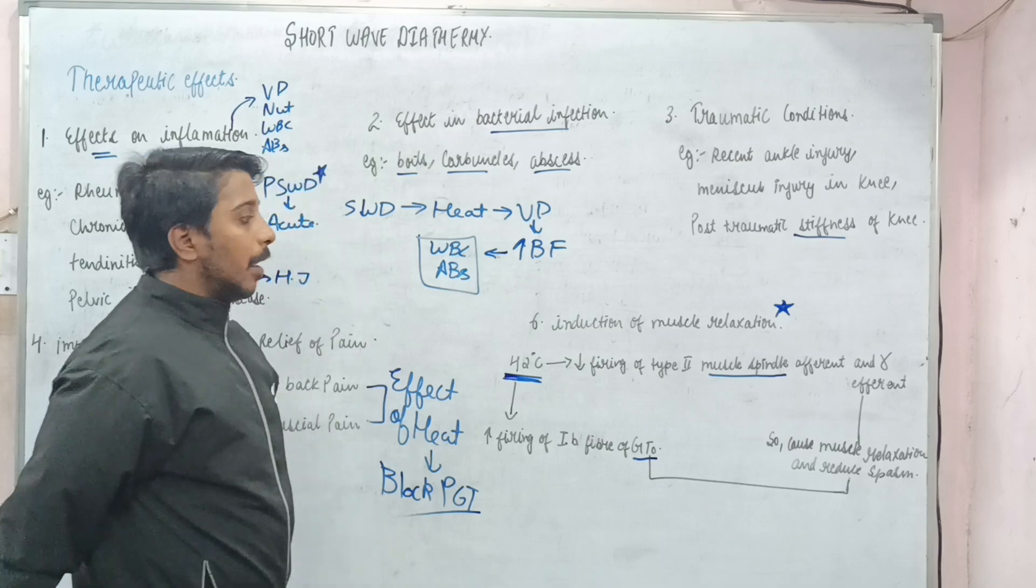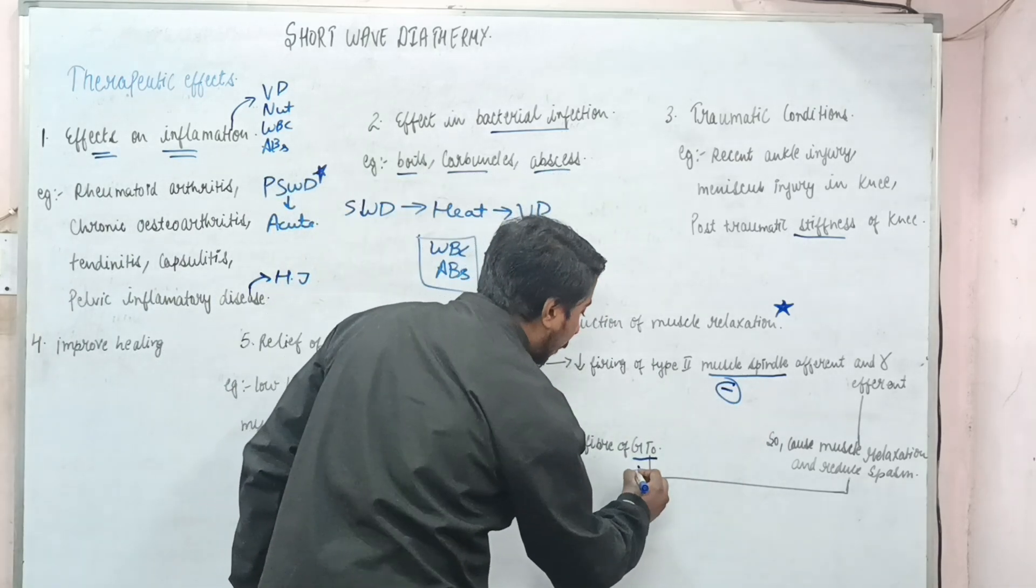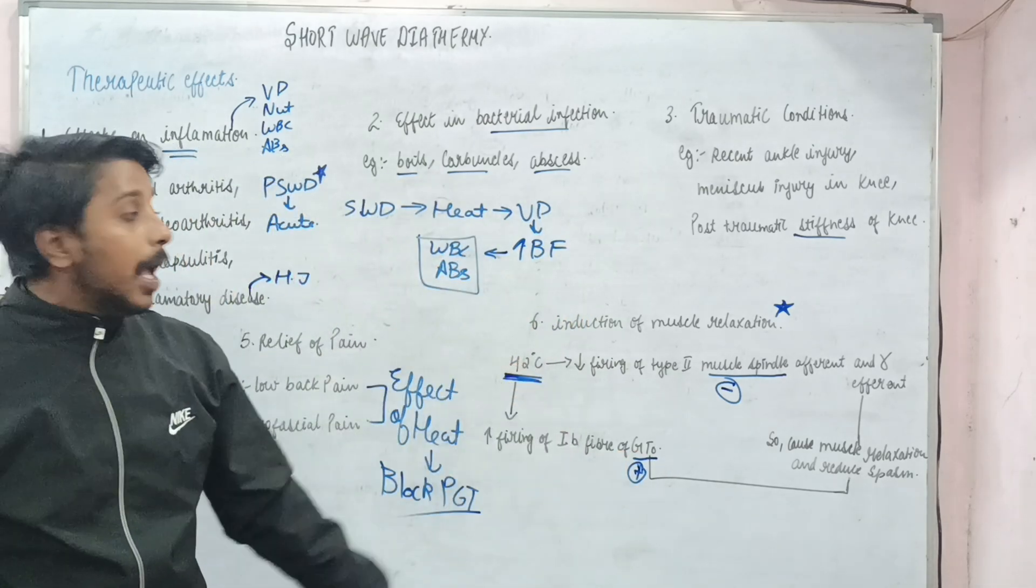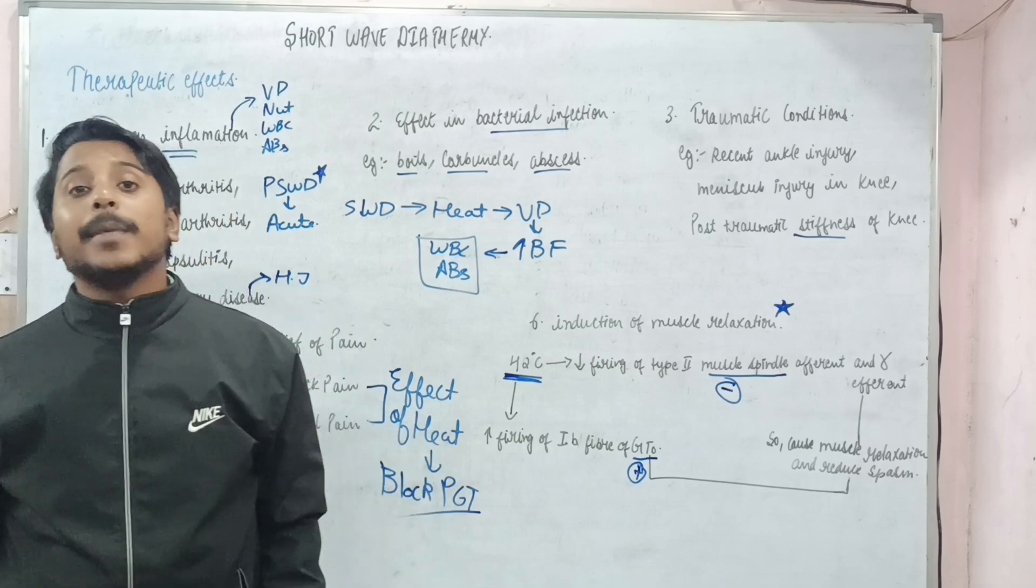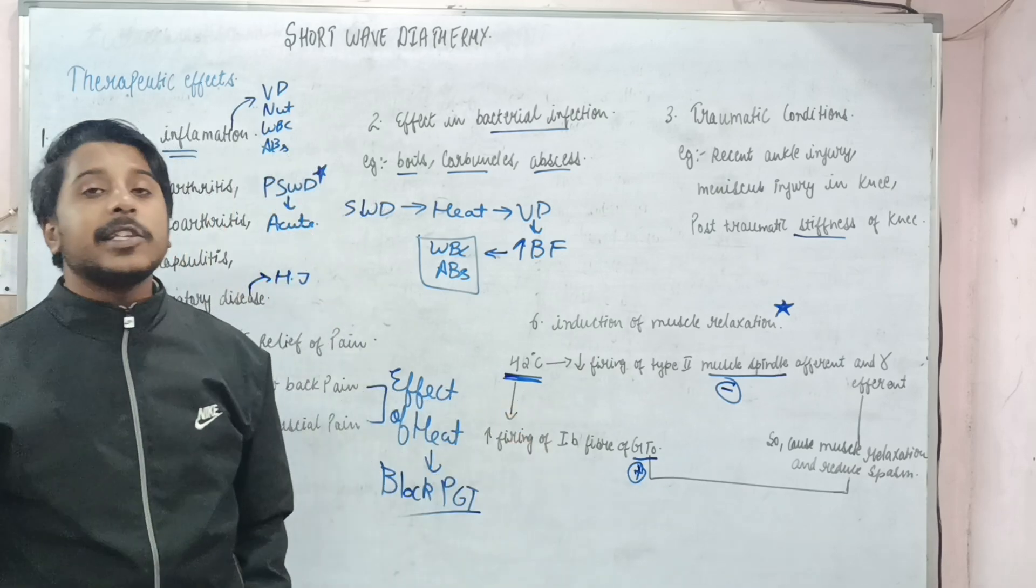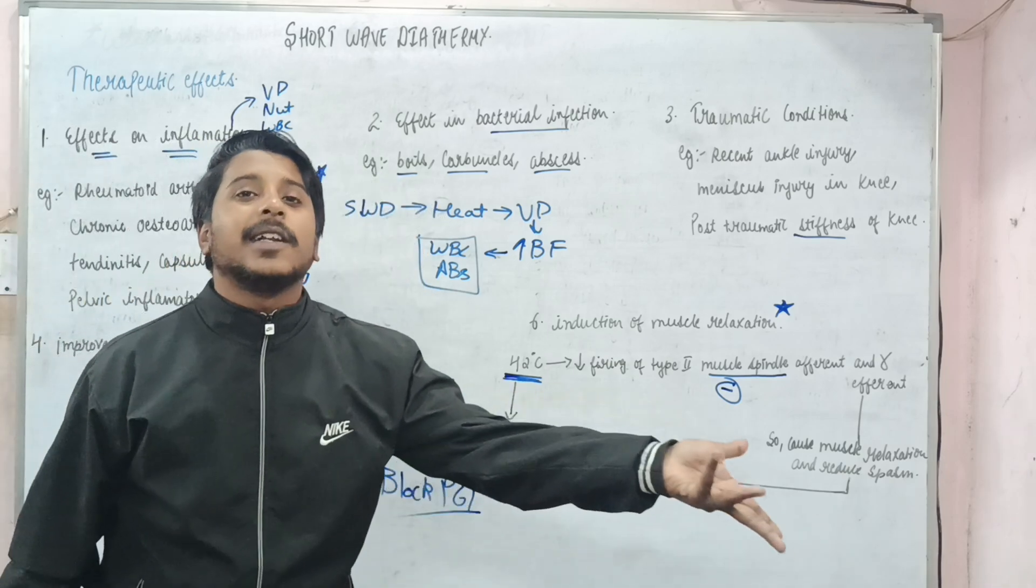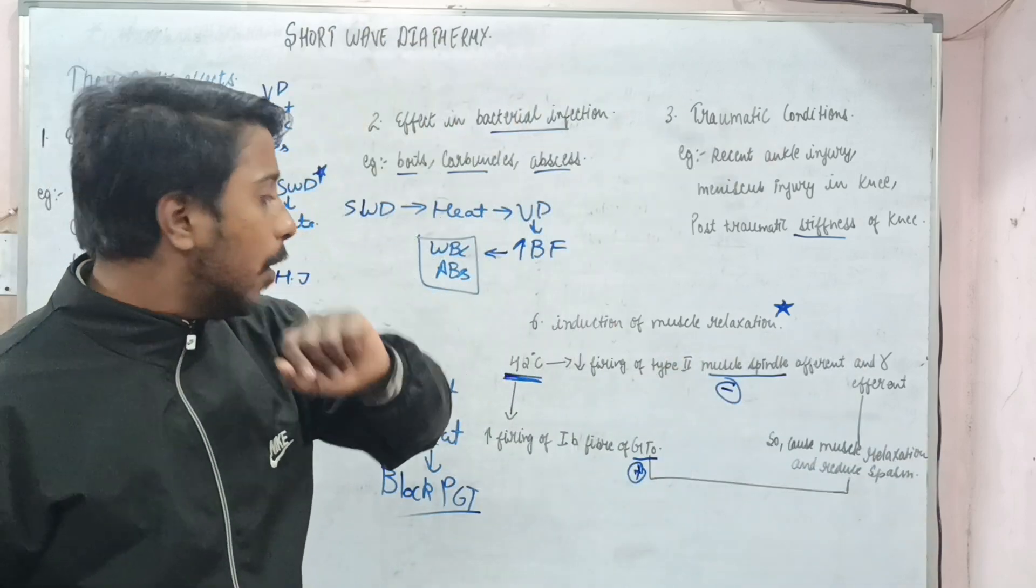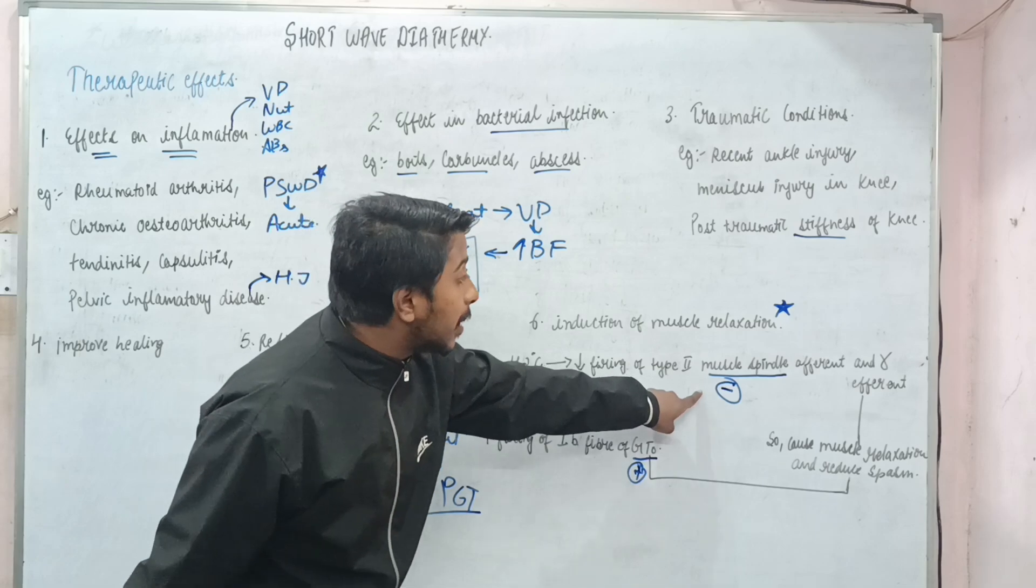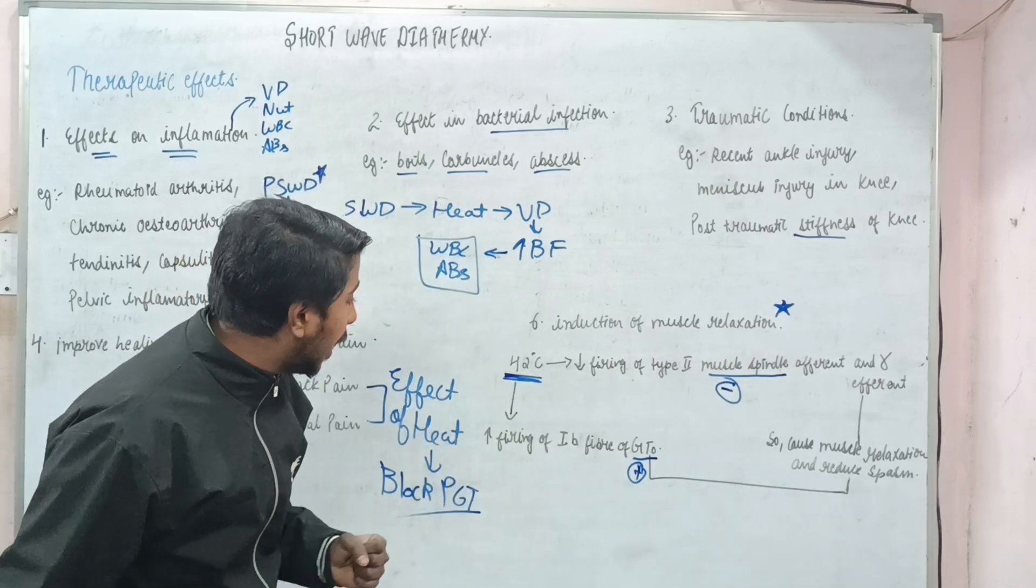Muscle spindle - negative. GTO - positive. What does this mean? This increase in temperature has a negative effect on muscle spindle and a positive effect on GTO. Let's understand the normal functions. Whenever GTO is stimulated, muscle is relaxed. Whenever muscle spindle is stimulated, muscle contracts. Here, GTO is stimulated.